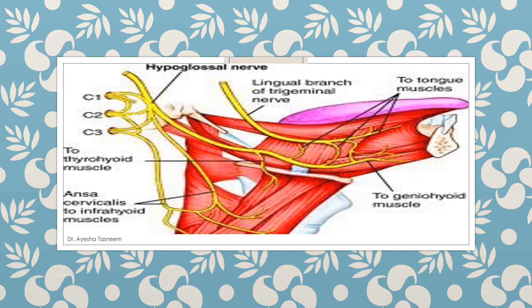Here you can see the hypoglossal nerve emerges on the anterior surface of the medulla oblongata between the pyramid and the olive. It crosses the posterior cranial fossa and leaves the skull through the hypoglossal canal. The nerve then passes downwards and forwards in the neck between the internal carotid artery and internal jugular vein, until it reaches the lower border of the posterior belly of the digastric.